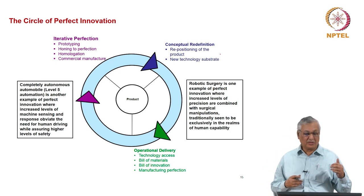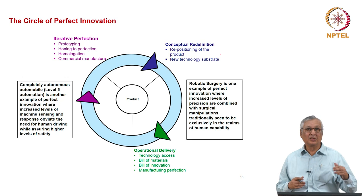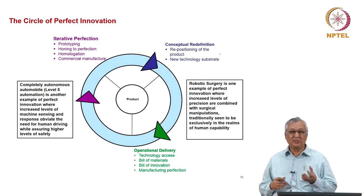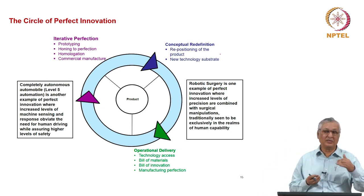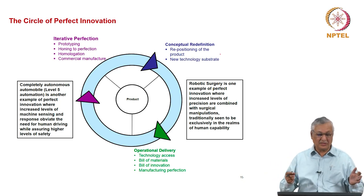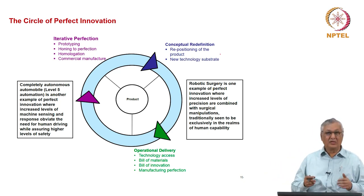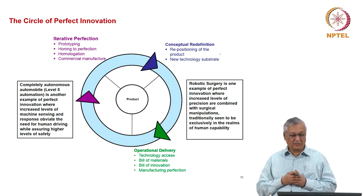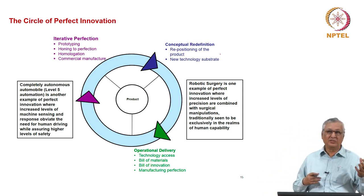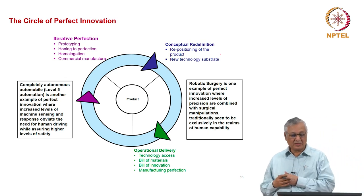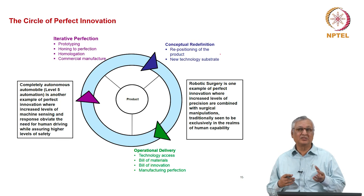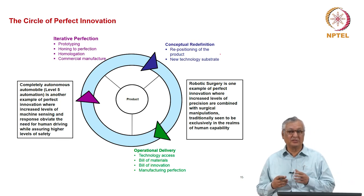We are also homologating the product to different usage conditions and different regulatory requirements. We are also developing the product to ensure commercial manufacturing. Because when we do a prototype, if a jig is malfunctioning, we can adjust it manually and then produce the component. However, in commercial manufacture, you cannot afford to do that because it will stop the manufacturing line. Therefore, iterative perfection requires adjustment to ensure that commercial manufacture is completely done. Then we have conceptual redefinition — that is, the market may not be realizing the importance of either perfection or innovation or the combination, and then we need to do repositioning of the product so that the new technology substrate coming out of perfect innovation is understood by the market.